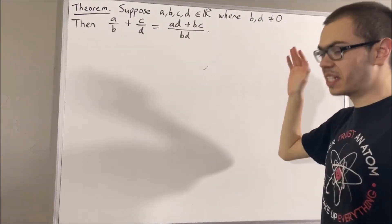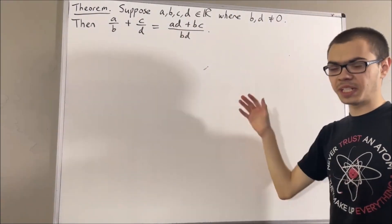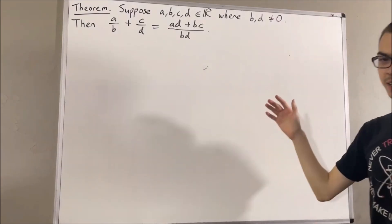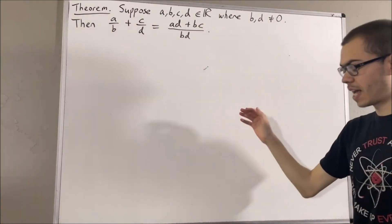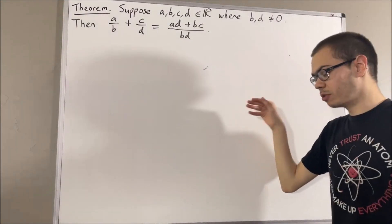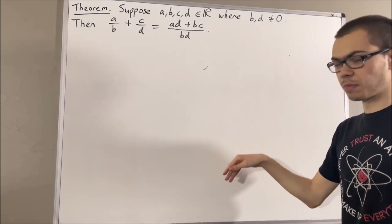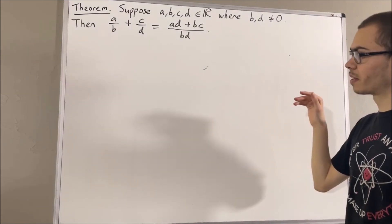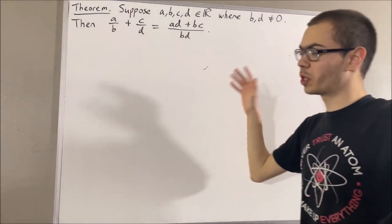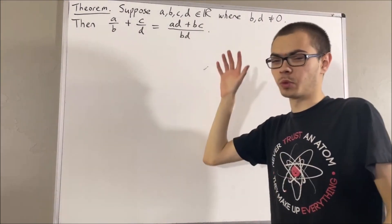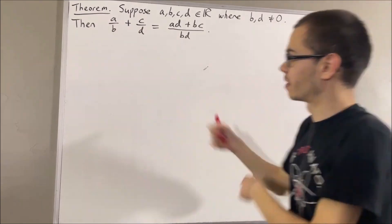In this series, we are using a list of 10 axioms for the real number system, and I'll leave that list of axioms in the description below. In this video, we are going to be using the following axioms.